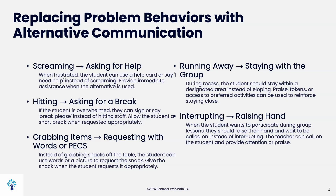For grabbing items, since they clearly want those items, the function is access. So instead of grabbing snacks off the table, the student can use words or PECS to request the snack, and you give the snack when the student requests appropriately. When they engage in these replacement behaviors, you have to immediately give them whatever the function is. If a student runs away to escape something, they should stay in the designated area instead of eloping. Praise, tokens, or access to preferred activities can reinforce staying close. But it depends on the function — if running away is escape, you might reinforce requesting a break instead.